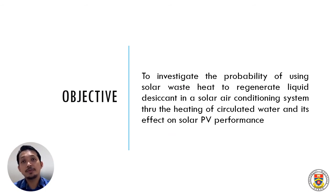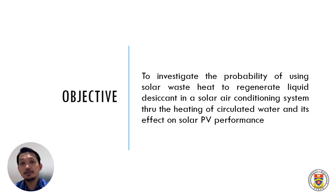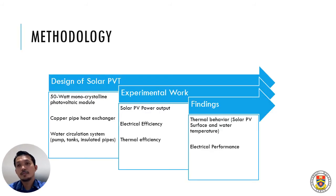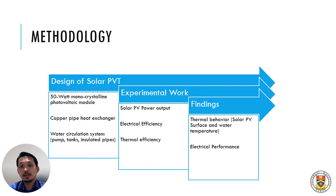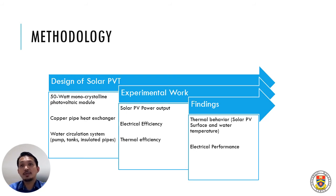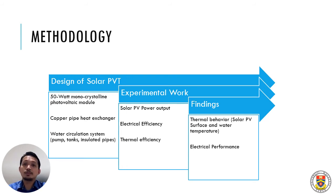The objective of this paper is to investigate the probability of using solar PV waste heat to regenerate liquid desiccant in a solar air conditioning system through the heating of circulated water and its effect on solar PV performance. There are three major steps to achieve this objective. The first is to design the solar PVT itself — we fabricate a copper tubing and attach it at the back of the solar PV. We use copper pipe as the heat exchanger, and then complete the experimental setup with a pump, tanks, and piping to circulate the water, then continue with the experimental work.